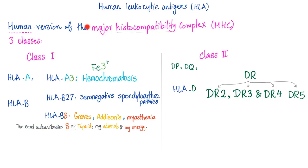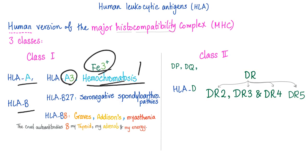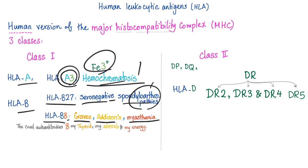Human leukocytic antigens are the human versions of the major histocompatibility complex. Class 1 MHC has HLA-A, B, and C. HLA-A3 is associated with hemochromatosis — remember Fe3 for the A3. Then we have HLA-B27, associated with seronegative spondyloarthropathies. HLA-B8 is associated with Graves disease, Addison disease, and myasthenia gravis. My mnemonic: the cruel O2 antibodies — 8, my thyroid, my adrenals, and my energy.